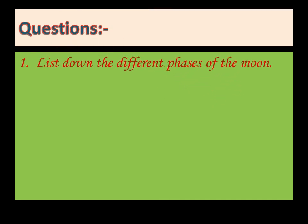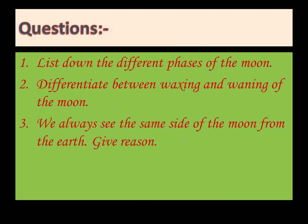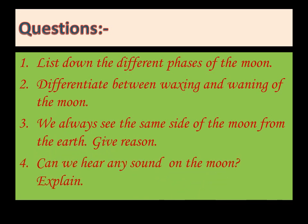Now you can write down the answers to these questions in your notebook. Dear students, please learn the first two modules very clearly and answer these questions. Question number 1: List down the different phases of the moon. Question number 2: Differentiate between waxing and waning of the moon. Question number 3: We always see the same side of the moon from the earth — give reason. Question number 4: Can we hear any sound on the moon? Explain.